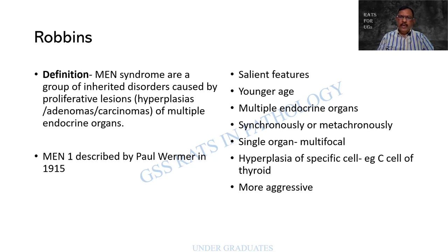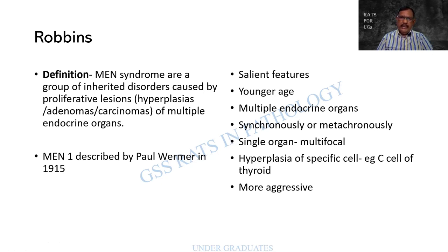MEN syndrome was first described by Paul Wermer in 1915, and it was called MEN1 because subsequently other types of MEN were identified. The salient features are: it occurs at a younger age, multiple endocrine organs are affected, and they may be synchronously or metachronously affected. Synchronous means all organs are affected simultaneously, whereas metachronous means at different times or in different sequences.